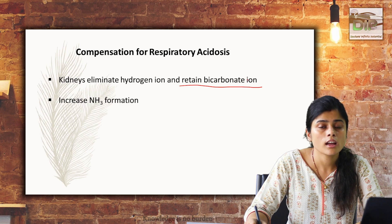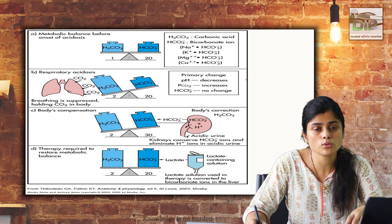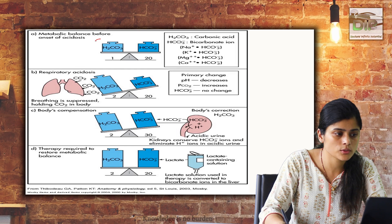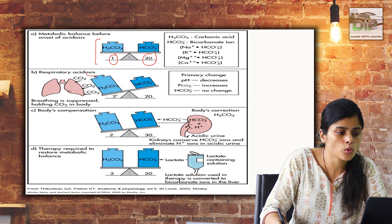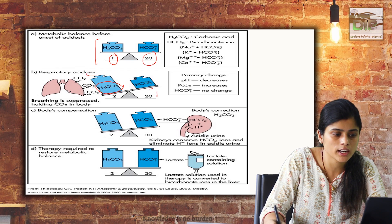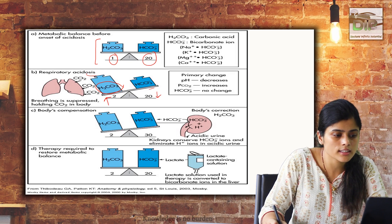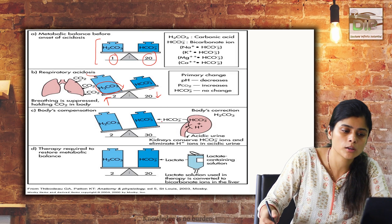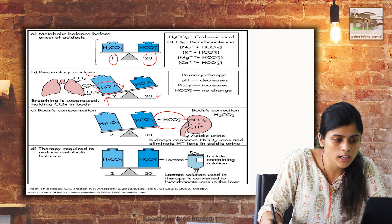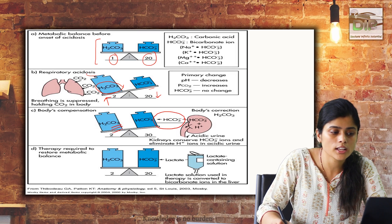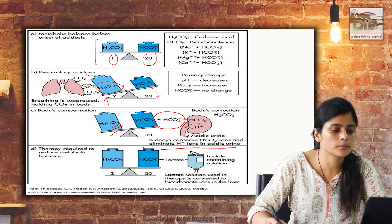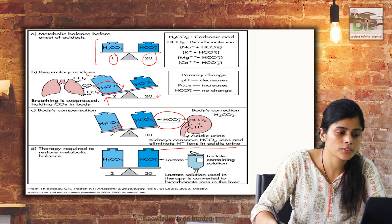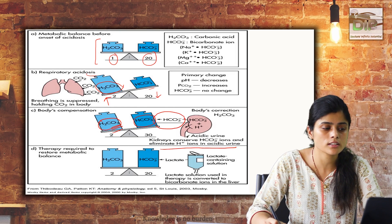The body combats respiratory acidosis primarily through the renal system: the kidney eliminates hydrogen ions and retains bicarbonate as much as possible. Second, there is increased ammonia formation — ammonia combines with H+ to form ammonium ion, which is excreted in urine, producing acidic urine. The patient may also hyperventilate to wash off CO2. The kidney compensates by reabsorption of bicarbonate in proximal tubular cells and excreting more H+, restoring metabolic balance.